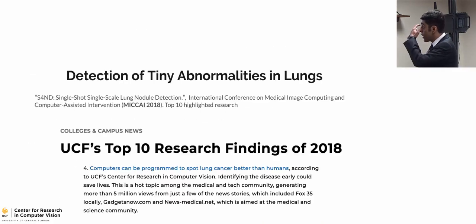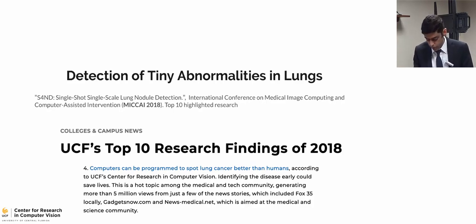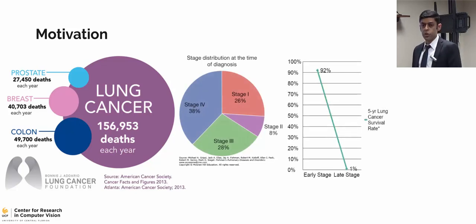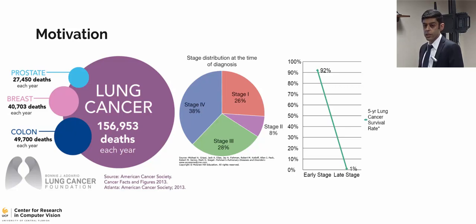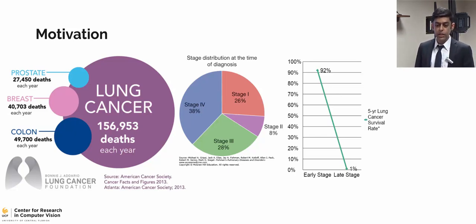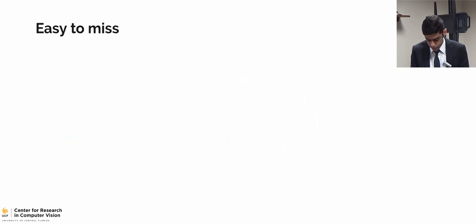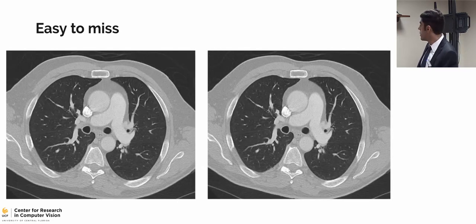The content of this chapter is published in MICCAI 2018, highlighted as a top 10 research finding at UCF, and is patent pending by UCF. It's very important to capture lung abnormalities in the very early stages — survival rate can dramatically decrease if we miss them. However, only 26% of these abnormalities are captured in earlier stages, normally because they're very tiny and similar to vessels in the lungs. We propose a detection framework to capture those tiny abnormalities.